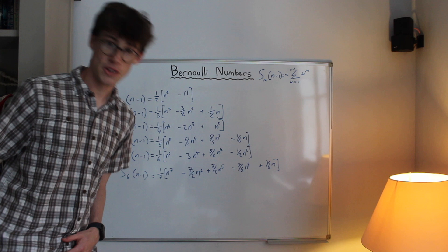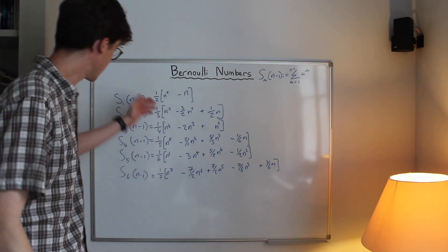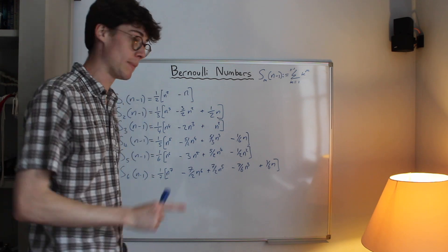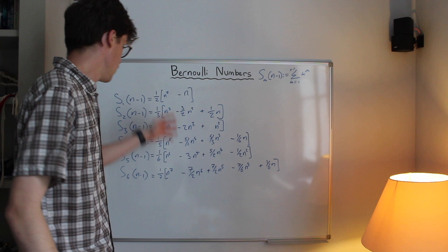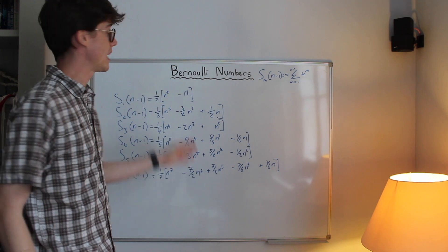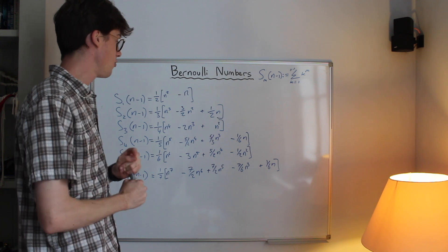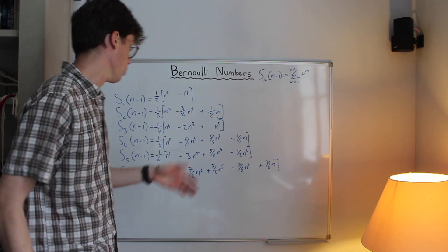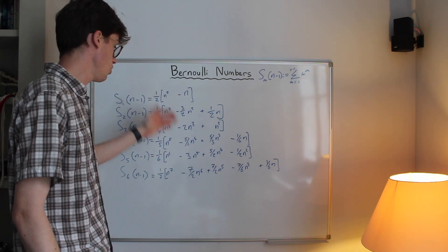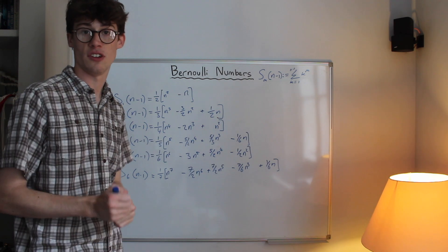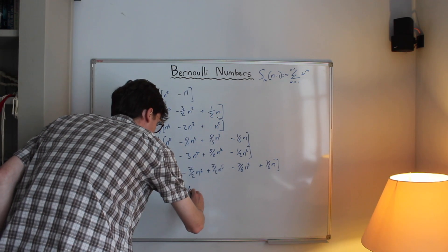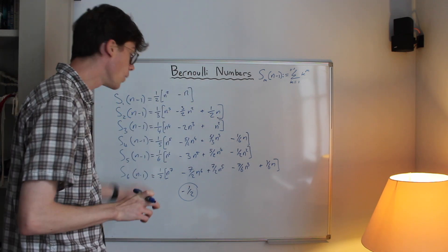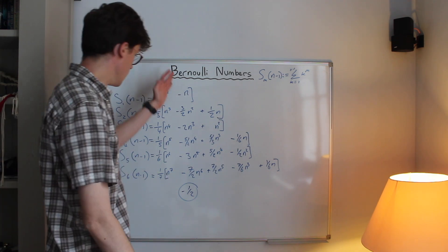Using this information, Bernoulli factors out that 1/(m+1) term for each row — so on the top row we factor out a half, on the second row we factor out a third, and we continue down factoring out 1/(m+1). Welcome back — what I've done is factored out 1/2 from the top row, 1/3 from the second row, and so on. Looking at the second column, we've got coefficients −1, −3/2, −2, −5/2, −3, −7/2 — clearly all multiples of −1/2, decreasing by −1/2 each time.